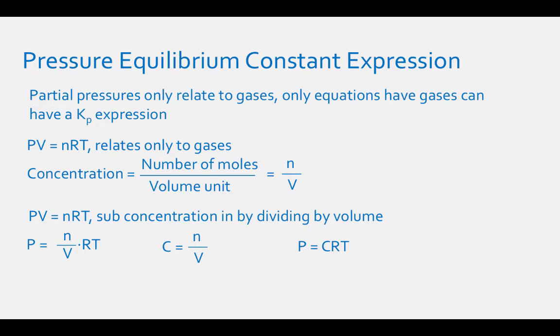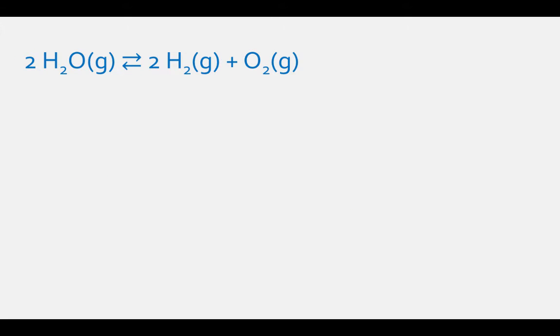Let's apply this to an example: 2H₂O(g) ⇌ 2H₂(g) + O₂(g). First, write the Kp expression. Remember, equilibrium constant expressions have products over reactants, so Kp equals the partial pressure of H₂ squared times the partial pressure of O₂, divided by the partial pressure of H₂O squared.